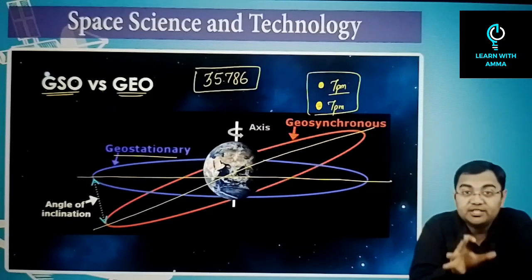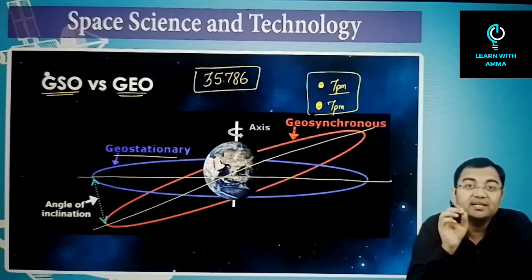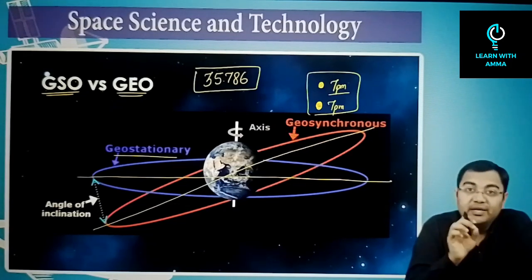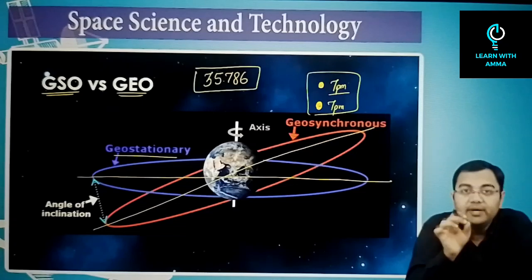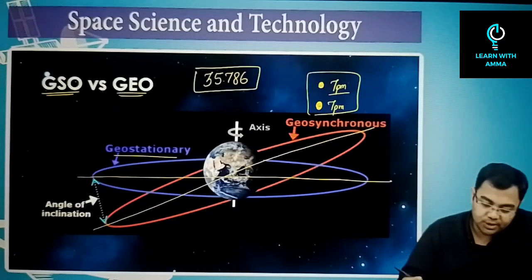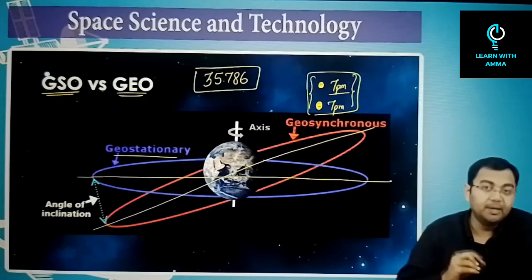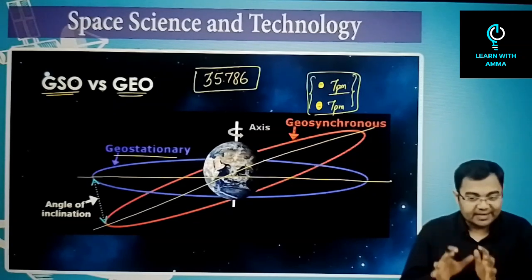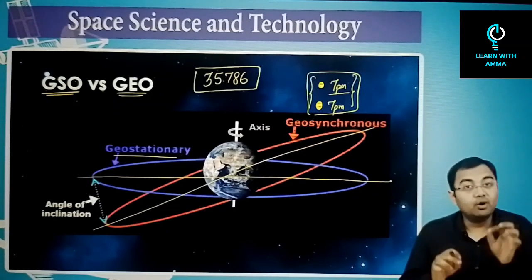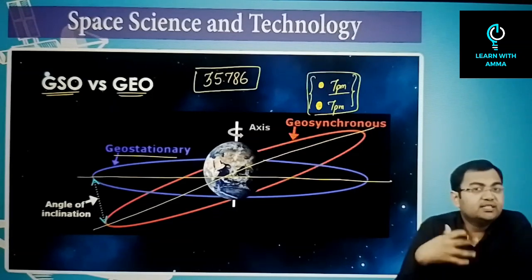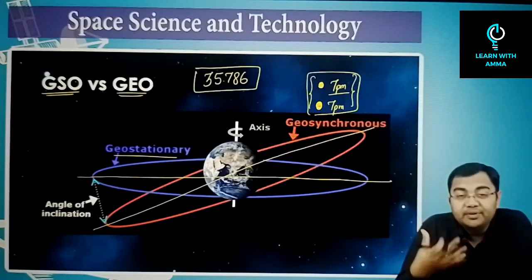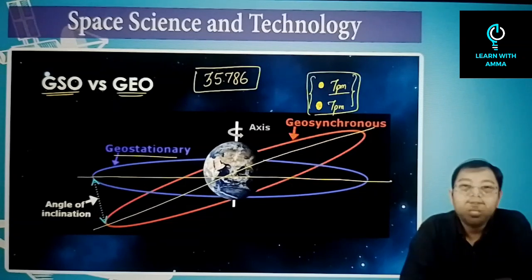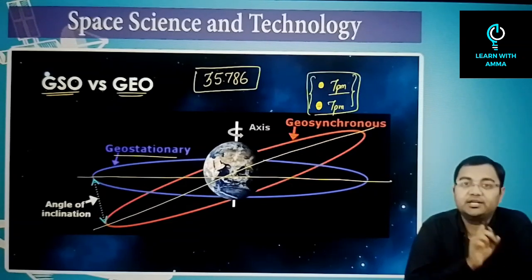The geostationary orbit is a very special case of geosynchronous orbit. The word 'geostationary' means the satellite is always stationary with respect to an observer on earth. Unlike geosynchronous satellites which appear at the same time each day, a geostationary satellite remains fixed at that point at all times.